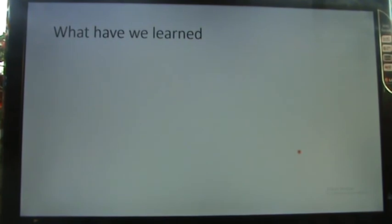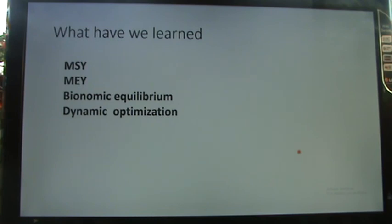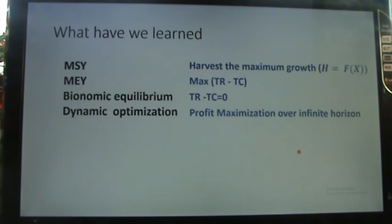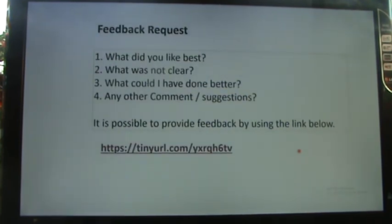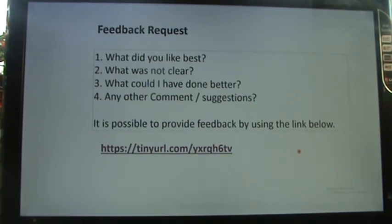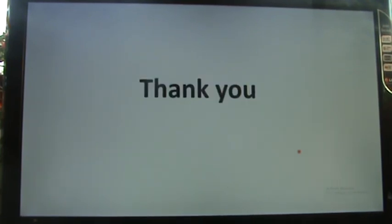To summarize what we've learned: MSY means harvesting the maximum growth, so H = F(X); MEY means maximum total revenue minus total cost, where TR − TC is maximized; and bionomic equilibrium is where TR = TC. The dynamic optimization framework integrates these over an infinite time horizon using a discount rate to find the Net Present Value-maximizing harvest policy. Thank you for listening — feedback can be provided anonymously using the link below.